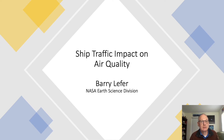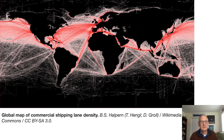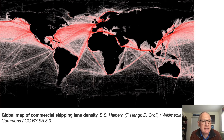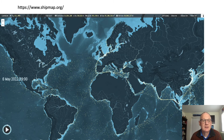Hello, welcome to the Ship Traffic Impact on Air Quality challenge. Just like roads and air travel routes, ships follow particular shipping lanes when traveling from continent to continent, and so NASA and ESA air quality satellites have been able to capture some of the emissions from these thousands of ships traveling around the world each day.